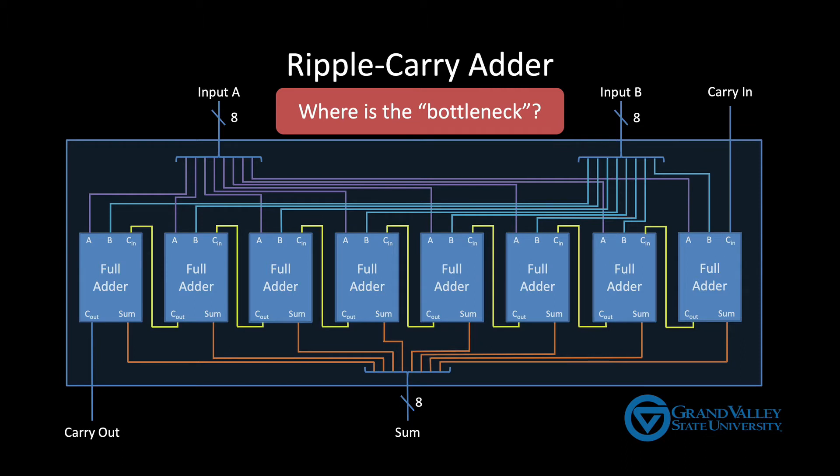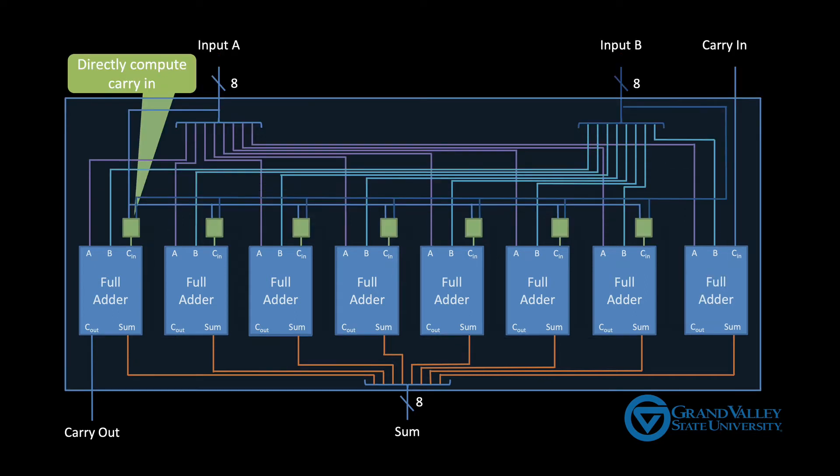Each full adder has to wait for all the full adders before it to complete before it can begin working. Ideally though we'd like all the full adders to work completely in parallel. To do that we'd also need to be able to generate the carry ins in parallel as well. Or if not in parallel we at least need to be able to generate those carry ins in sublinear time. So let's sketch this idea of having all these carry ins in parallel.